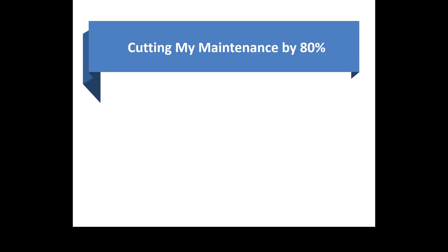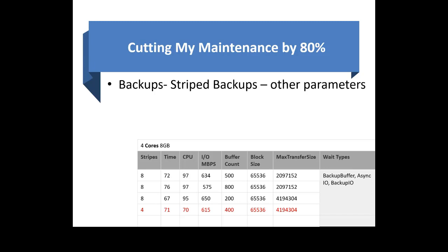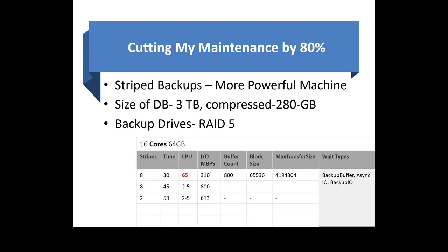We changed the parameters a little and you can see the time came down to 72 minutes, but CPU went up to 97% with an eight-file backup on a four-core, 8 GB machine — watch out for that. On the production server with 16 cores and 64 GB RAM, we were actually able to finish an eight-file backup in 30 minutes. The same database that was taking two to two-and-a-half hours is now under 30 minutes.